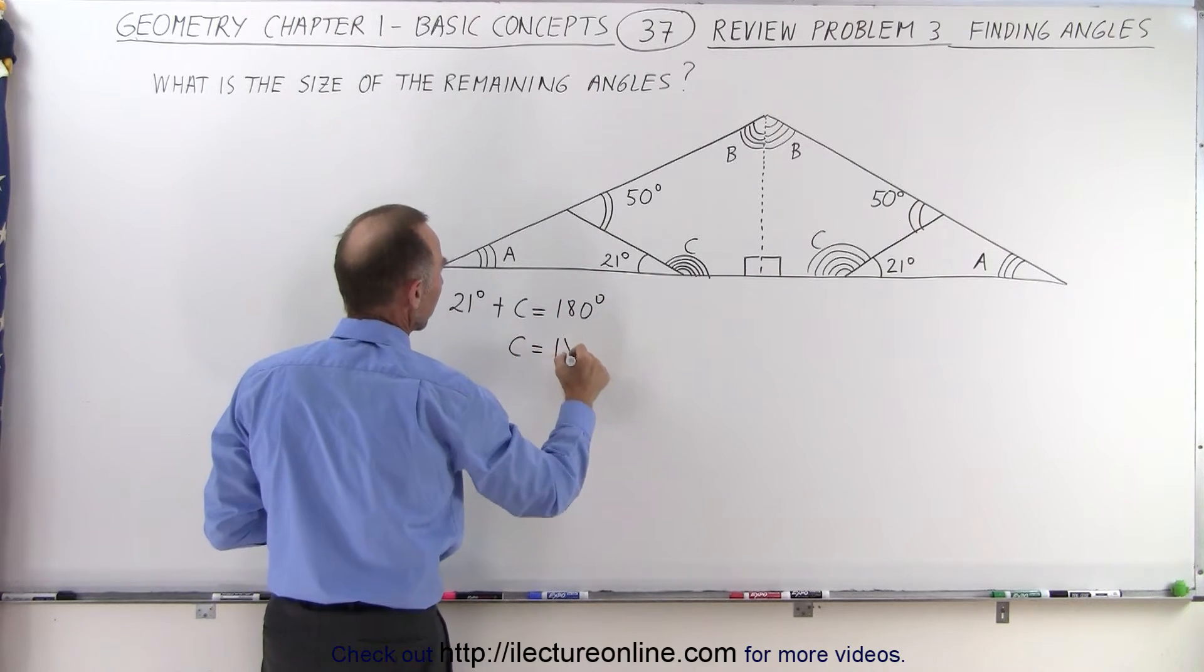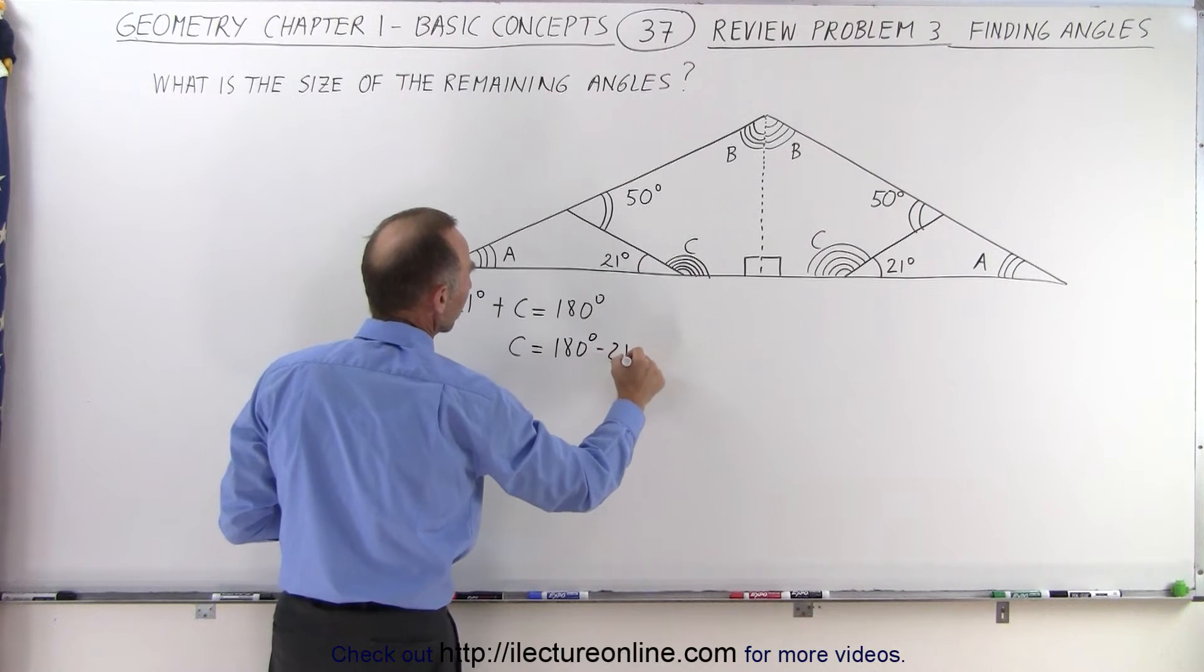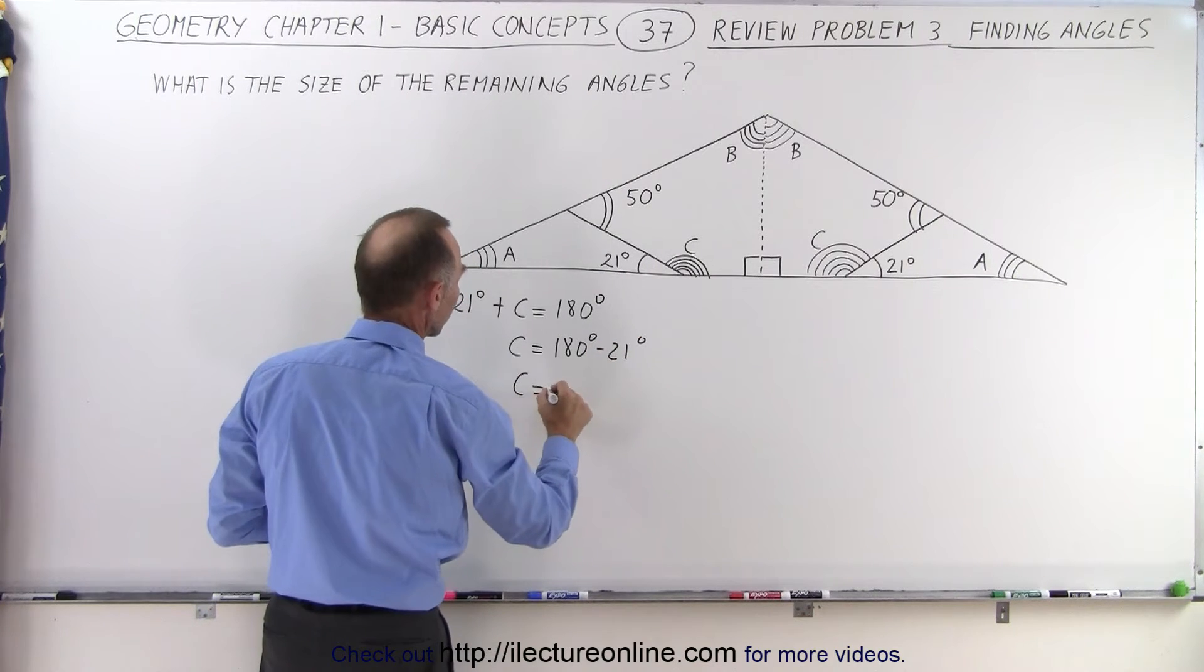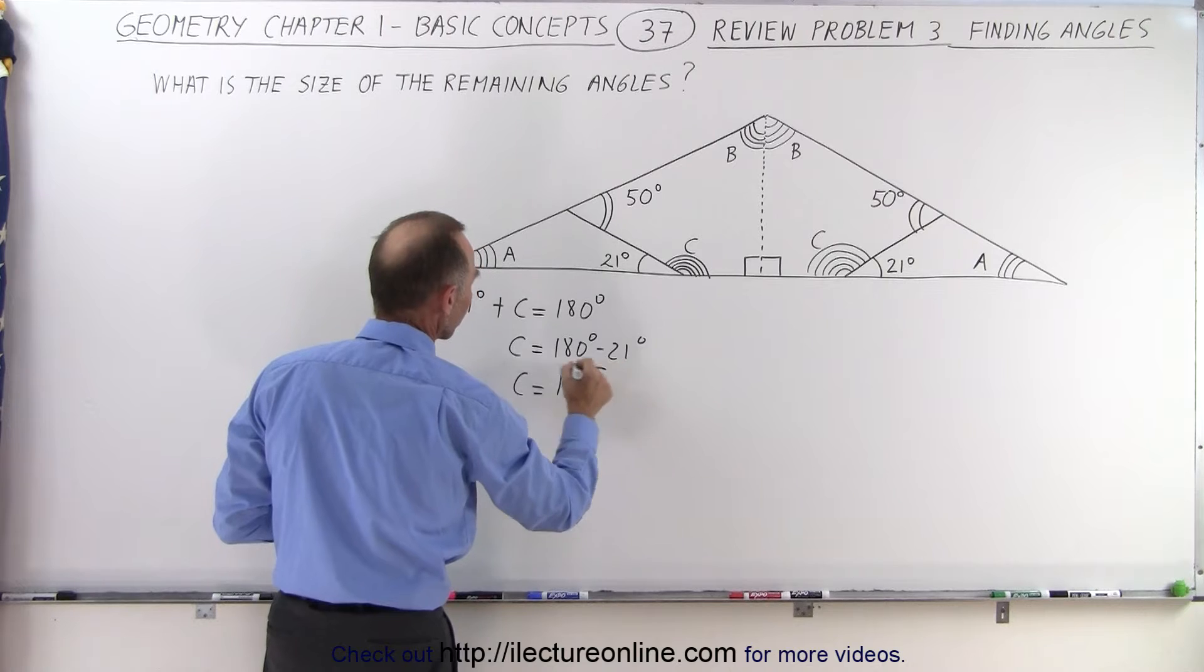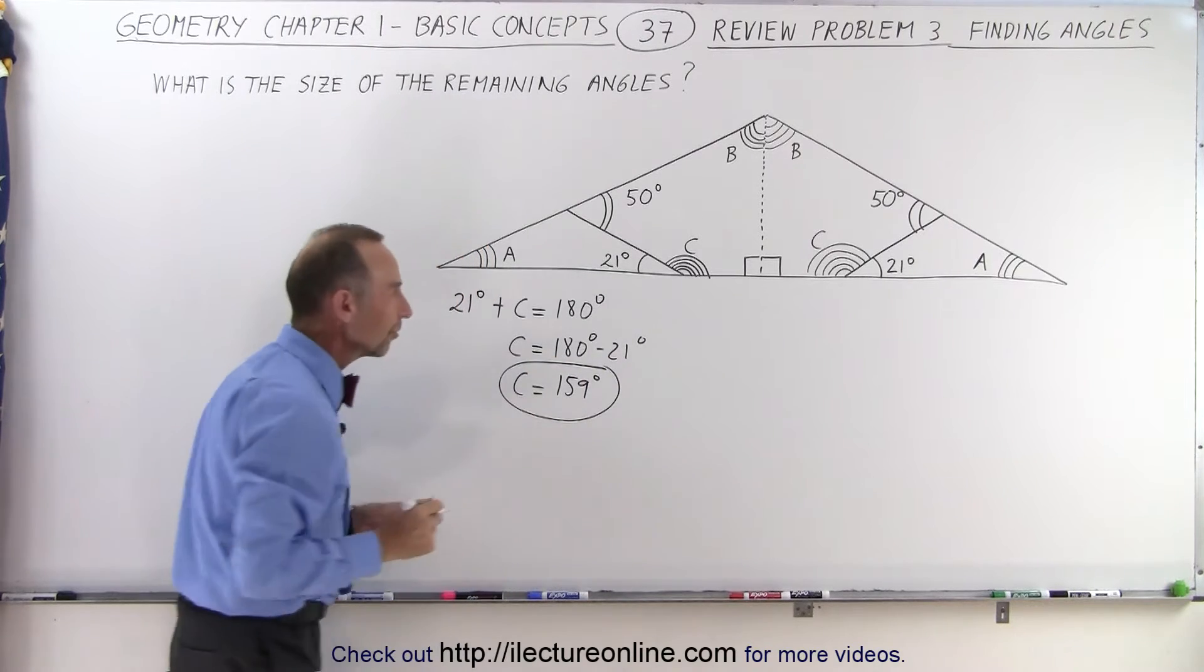So that means C is equal to 180 degrees minus 21 degrees. So C is equal to 159 degrees. So that gives us the first angle.